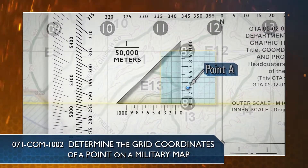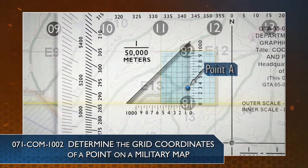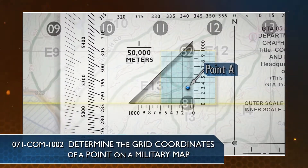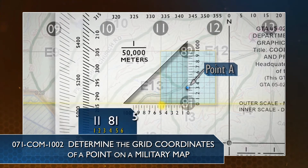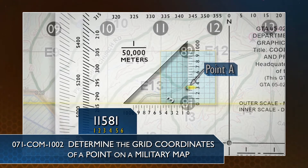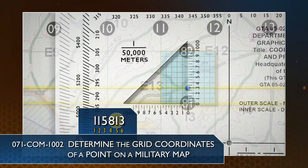The six-digit grid coordinates of your location can be determined by using a coordinate scale and protractor, a plotting scale, or by visualizing a 10 by 10 grid box inside the appropriate grid square. For a full explanation of this procedure, refer to task Determine the Grid Coordinates of a Point on a Military Map.